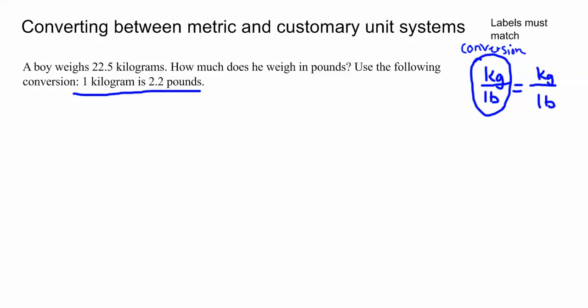We're going to use that conversion and set it up on one side of our proportion. Kilograms and pounds is equal to kilograms and pounds. As long as your labels match, like here we have kilograms both in the numerator so they match. You can also put pounds in the numerator on both sides and then kilograms on both sides in the denominator, as long as those labels match. But in this case if we make sure our labels match we are always going to be able to be confident that we will have a correct answer.